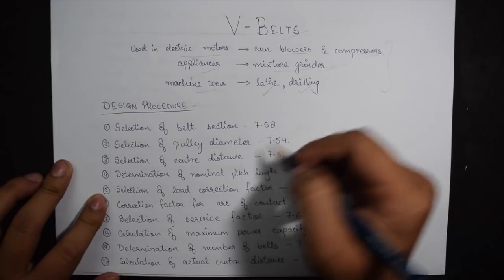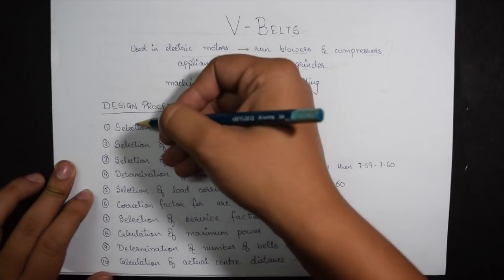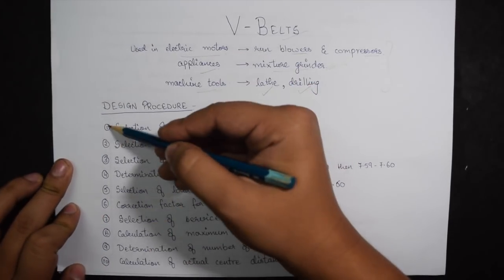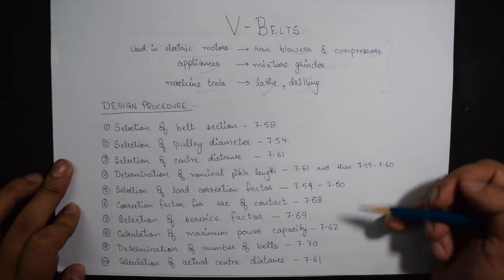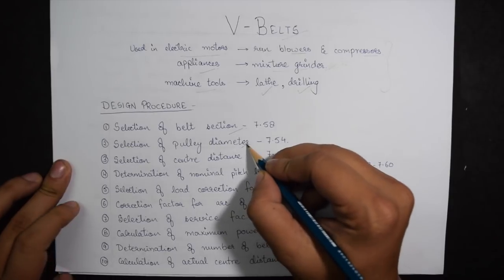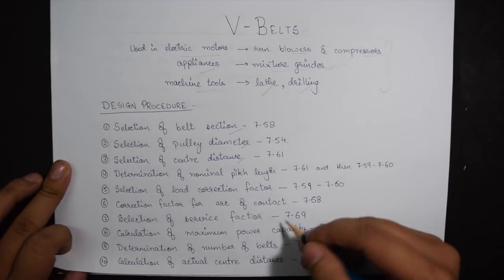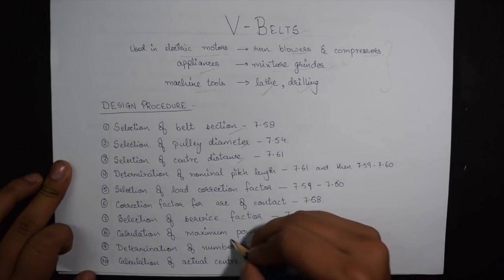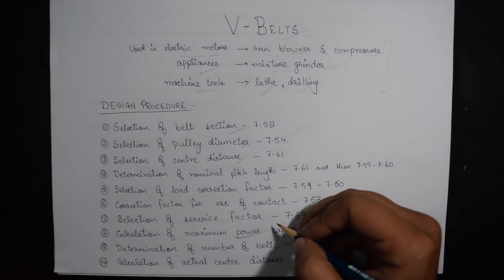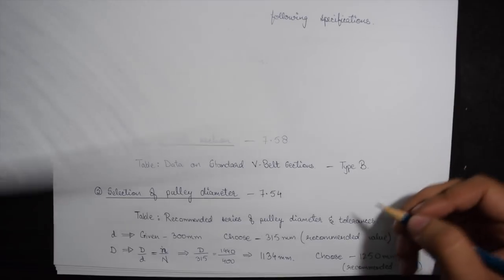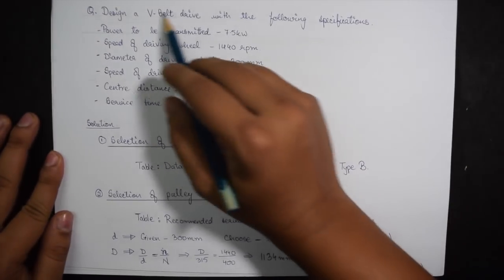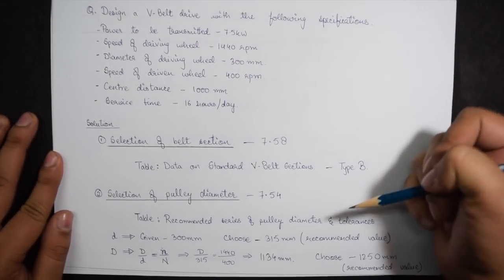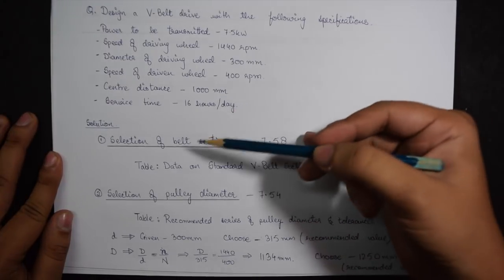For calculating various factors we have a design procedure. So over here we have 10 steps starting from selection of belt section, going on to the pulley diameter, center distance and finally calculating the number of belts required and the maximum power capacity. Here we have a question. By solving this question I'll try and explain to you all the 10 different steps going on to each and every design procedure step by step.